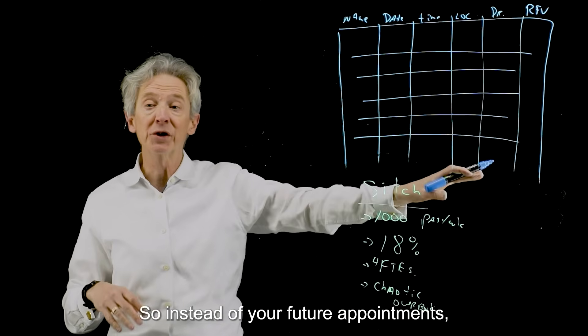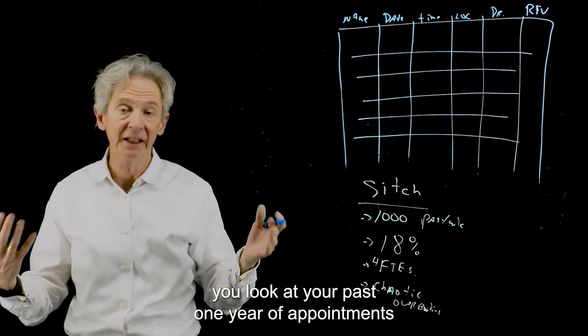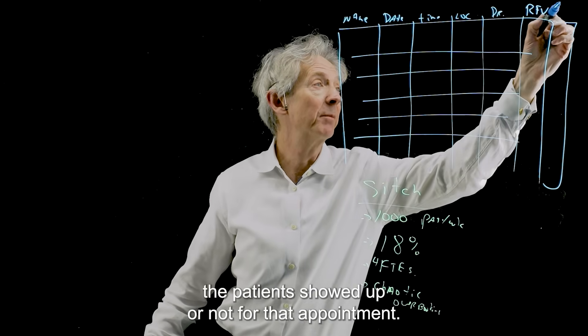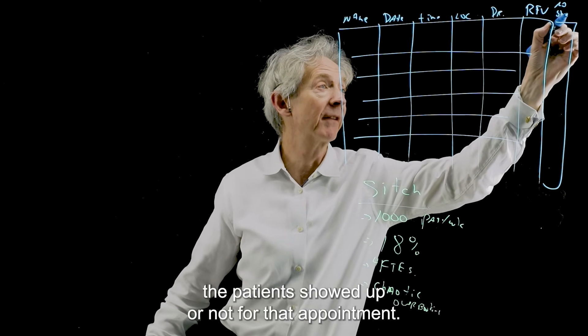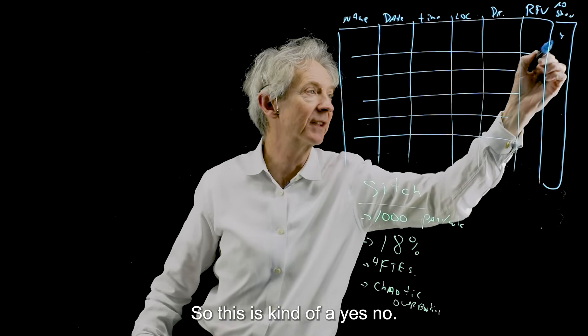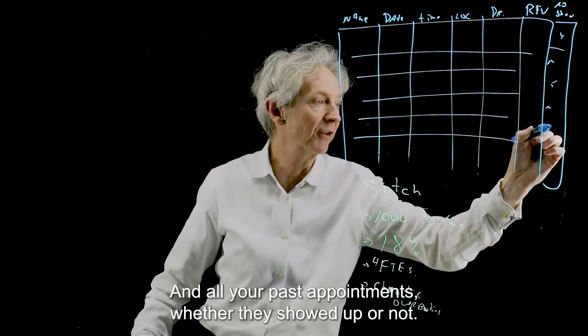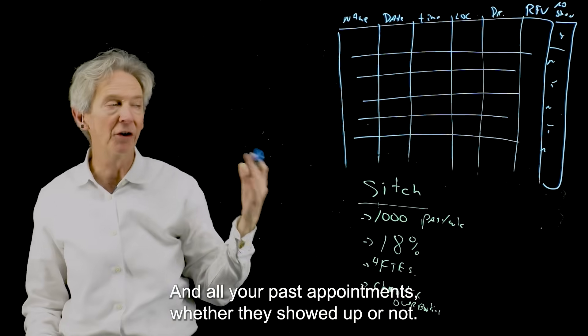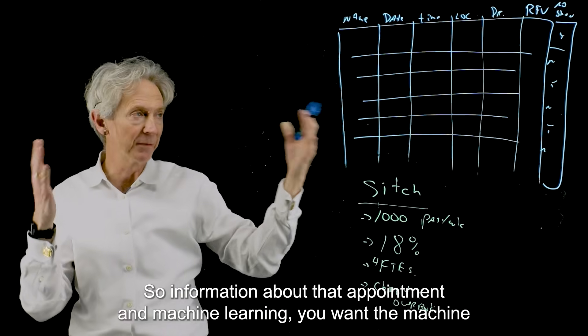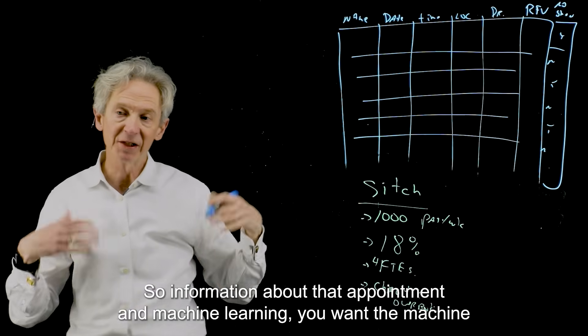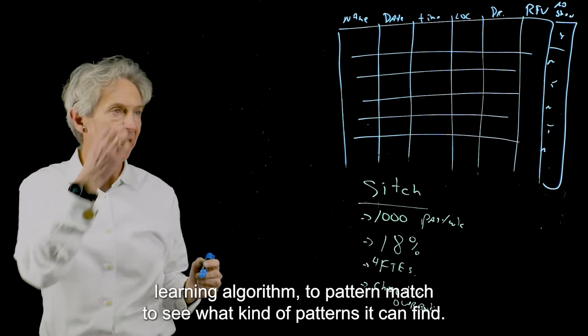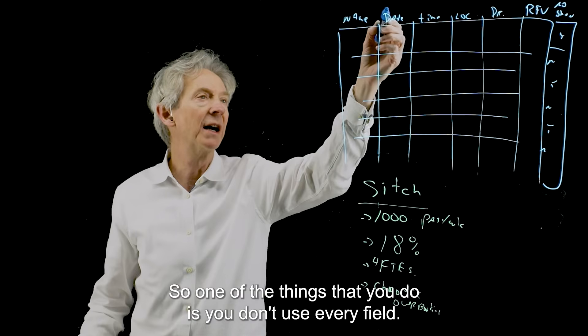So the first is, let me describe the machine learning part of it because this is kind of interesting to me at least. So instead of your future appointments, you look at your past one year of appointments and then you look at whether the patient showed up or not for that appointment. So that last column is your label. So this would be a yes, no on all your past appointments, whether they showed up or not. And then the rest of the columns are what's called your feature.